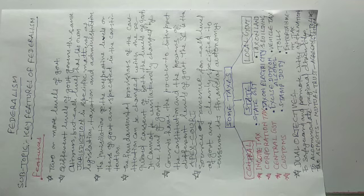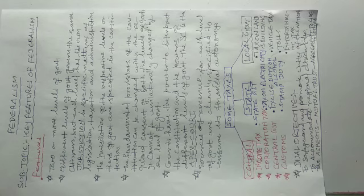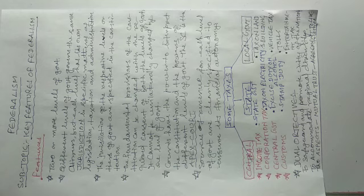The second key feature is that different levels of government — central government, state government, local self-government — govern the same citizens. For example, people of Bilai are governed by Bilai Nagar Nigam, they are governed by the state of Chhattisgarh, and they are governed by the government of India. All three levels of government govern the same people. So the second feature is: different levels of government govern the same citizens.